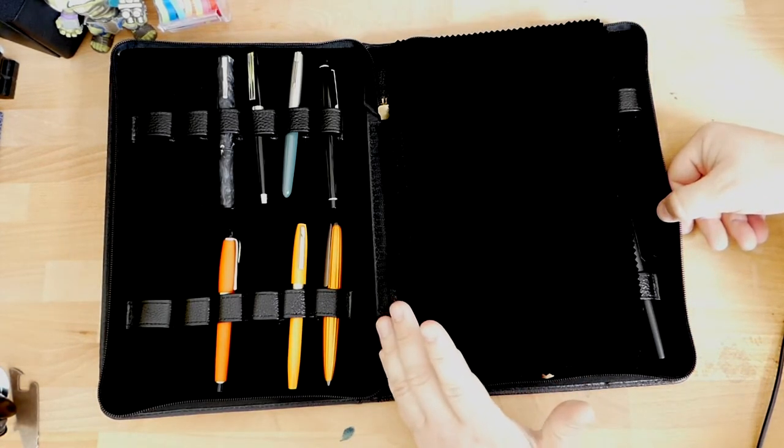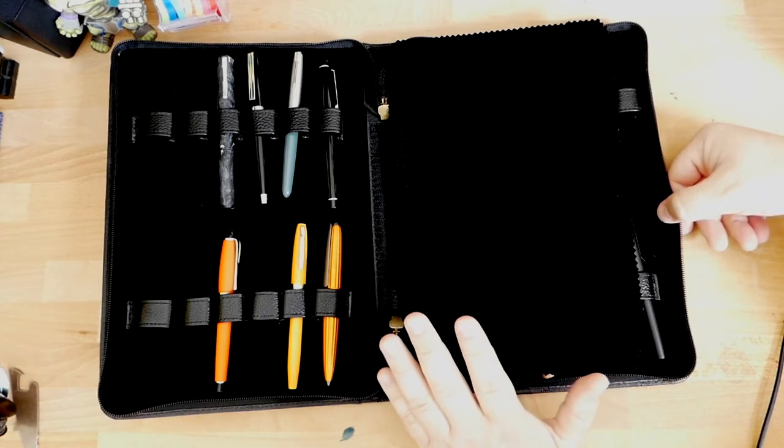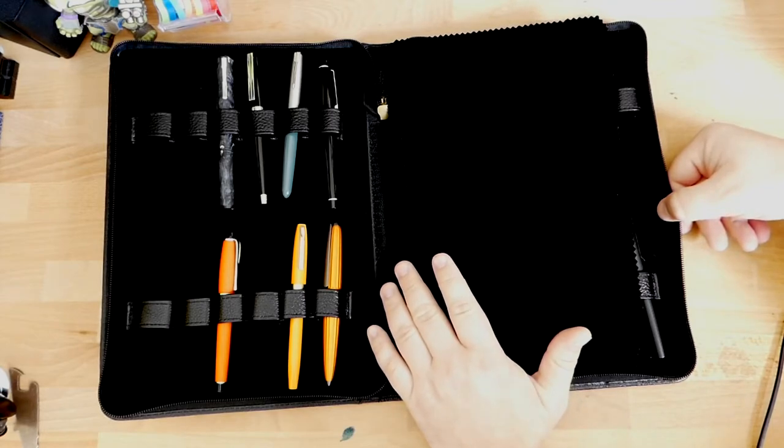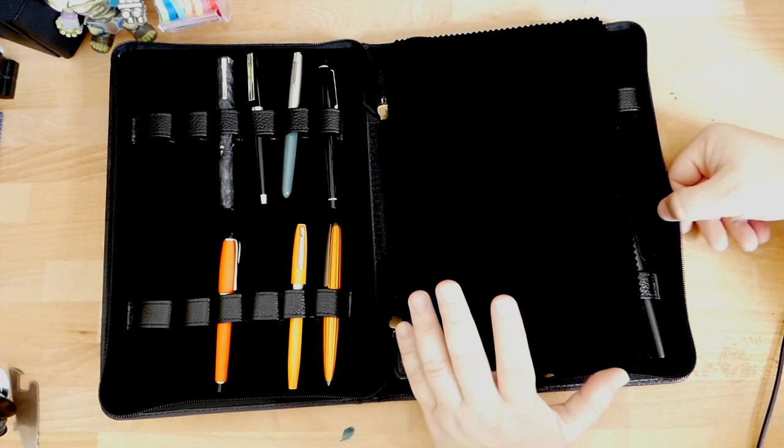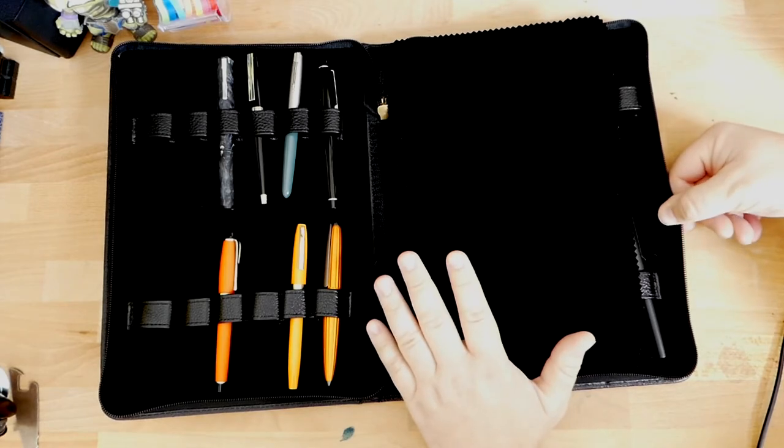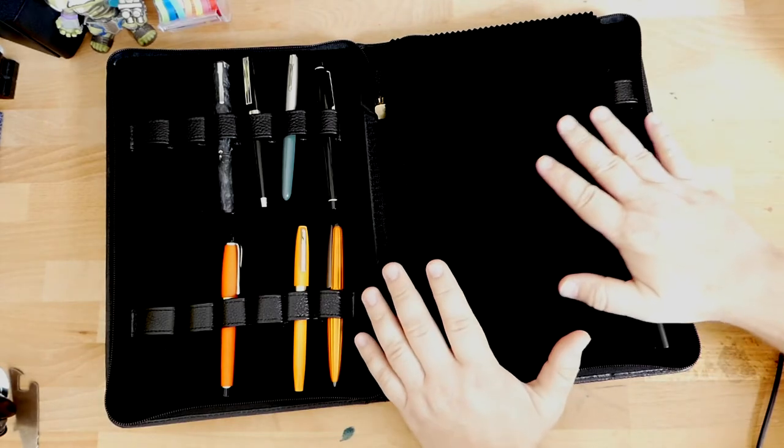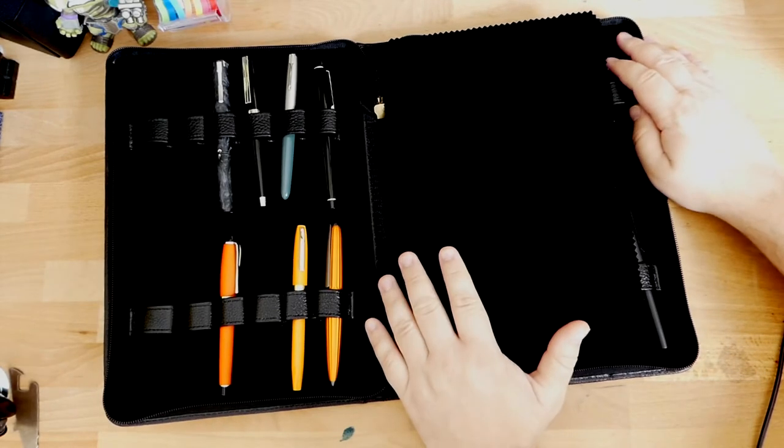And I think this pen case gives you all that stuff, and at a very reasonable price. As I said, this is $50 right now, and $50 for a 24-pen case like this, this is head and shoulders better than that Monteverde case. It holds more pens, but I think less well, and with less protection, and not that much less price.